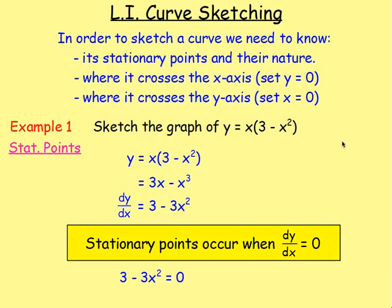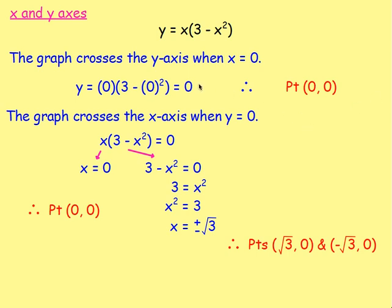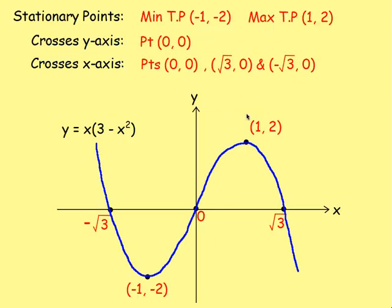We can take that a stage further and sketch some curves. To do that, work out the stationary points and their nature, then work out where the graph crosses the x-axis and the y-axis. Work out the stationary points by differentiating, setting equal to zero, and finding x. Work out maximum or minimum using the nature table. Then find where the graph crosses the y-axis by setting x equal to zero, and where it crosses the x-axis by setting y equal to zero. Take all those points and you should be able to sketch what the graph looks like.